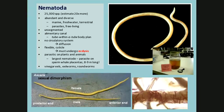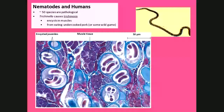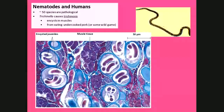Nematodes in humans — about 50 species are pathological. One of the better known is the Trichinella worm, which causes trichinosis — a disease where the worm encysts in the musculature, causing muscle degeneration and tissue damage. It comes from eating undercooked pork or wild game that hasn't been properly cooked.